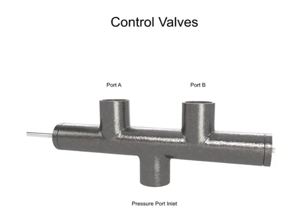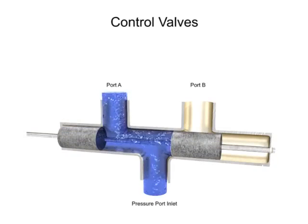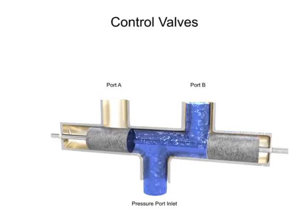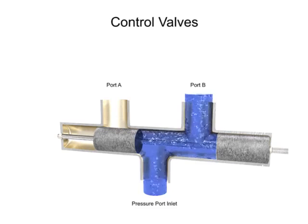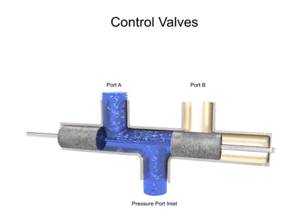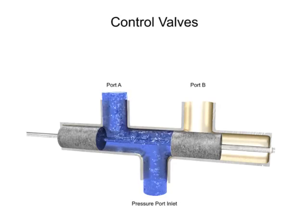Directional control valves are used to stop, start, route, and divert fluid streams without affecting the pressure level or the flow rate of the system. Directional control valves are identified by the number of ways that fluid can flow and the number of positions the valve can produce.